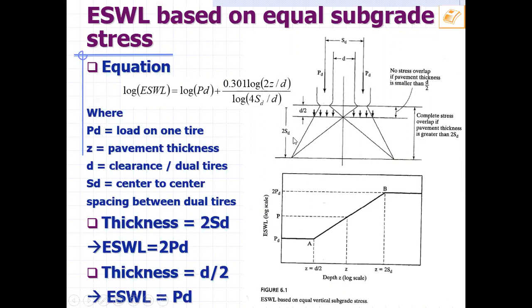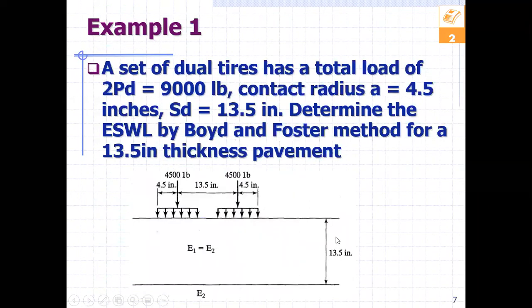When you have more than 2 times S_D, in that case you have full overlap of the two dual tires. So let's look at an example.